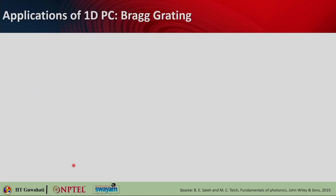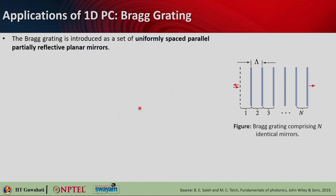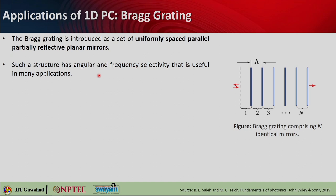Let us look into the application of 1D photonic crystal. Bragg grating is a set of uniformly spaced parallel partially refractive planar mirrors. Here we are showing n identical mirrors. What happens in this grating is that when incident light falls, some particular wavelength or frequency gets reflected and the remaining gets transmitted. Such a structure has angular and frequency selectivity, which is useful for many applications such as filtering and pulse compensation in optical fiber communication.